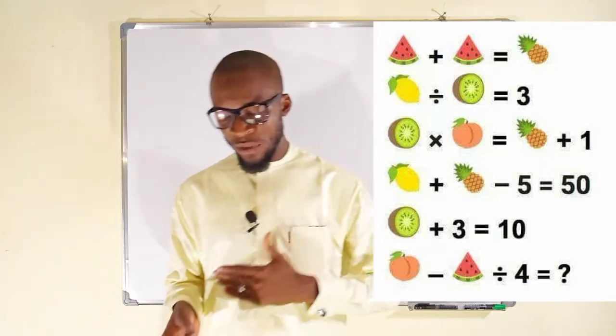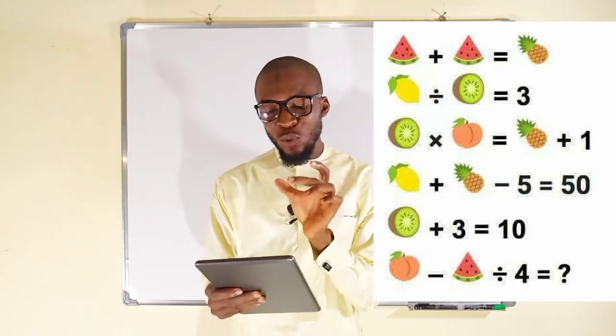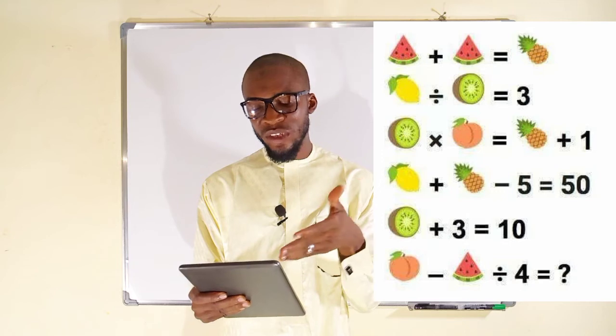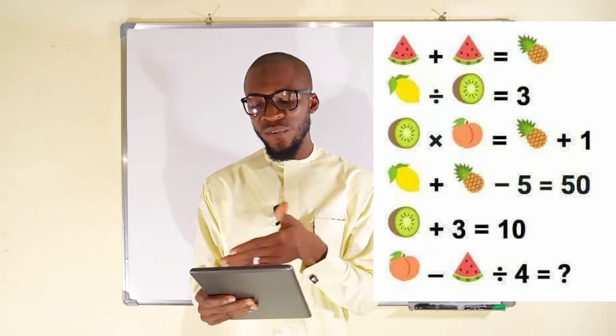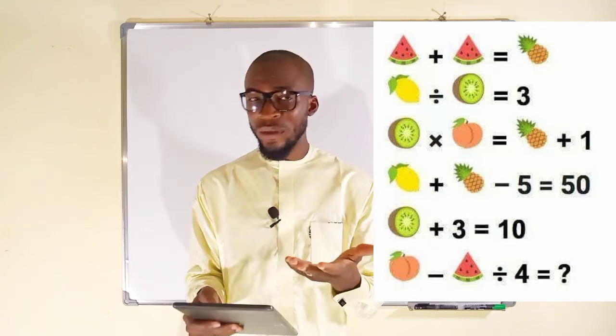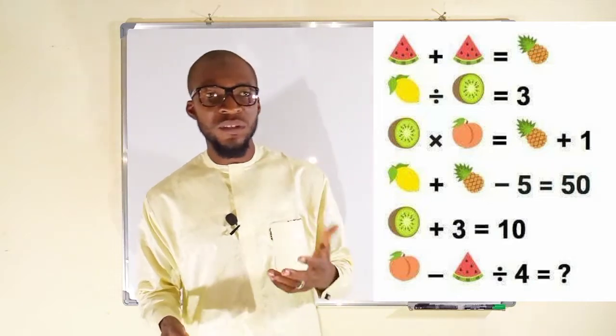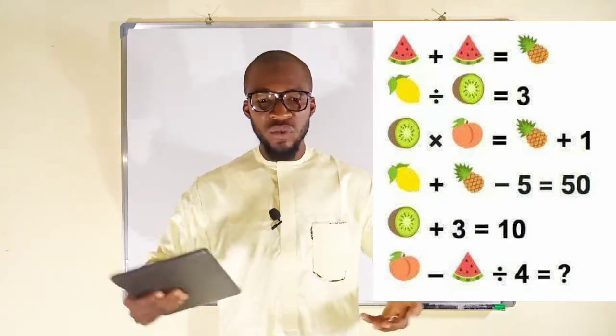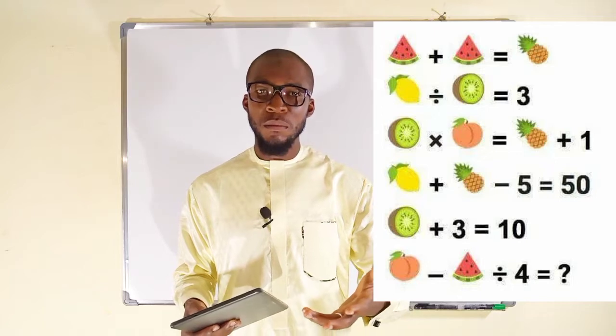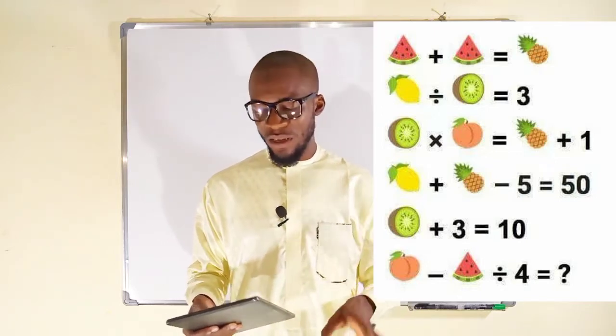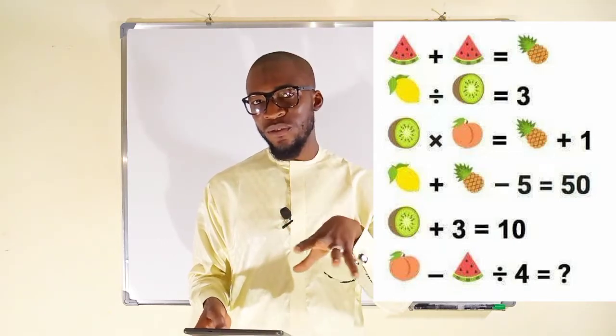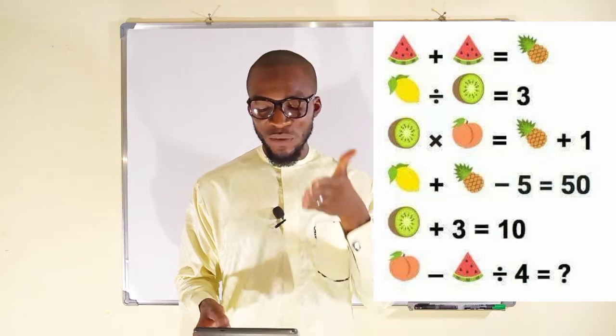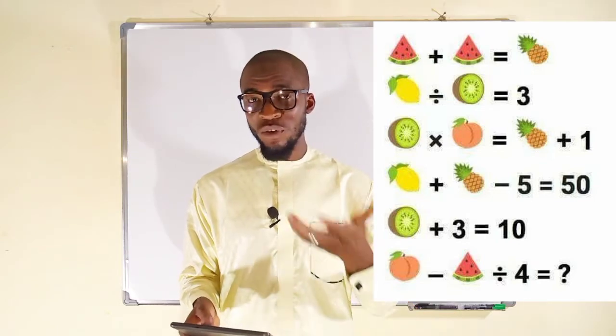The first equation is formed by adding two slices of watermelon together to give rise to a pineapple. If you are familiar with algebra, you know we do use some things to represent numbers, mostly letters. This time around, we are using fruits to represent numbers. So each of these fruits represents some numbers.